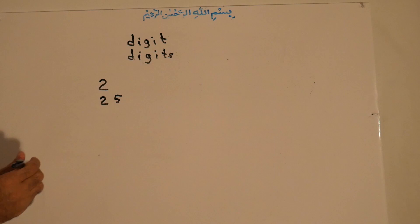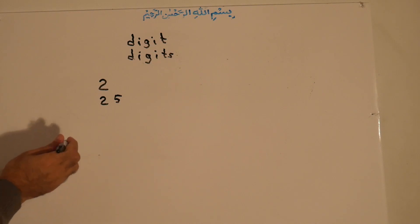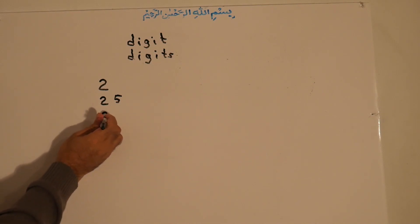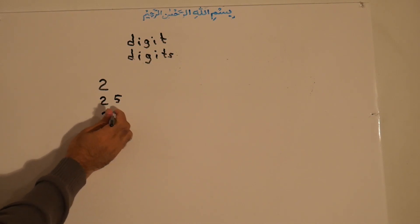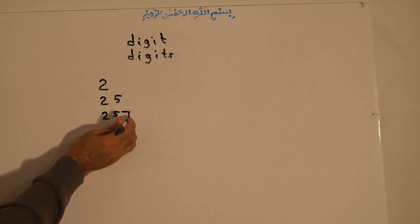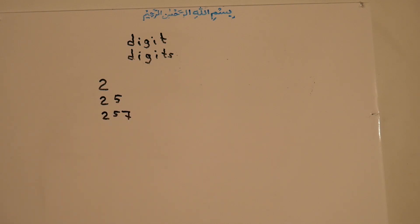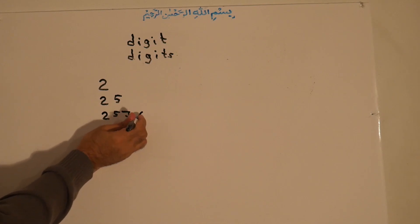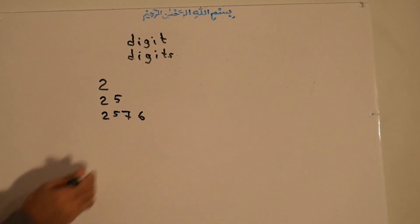If you want three digits, for example two, five, seven — that is a three-digit number. If you make it four digits: two, five, seven, six — it is a four-digit number.